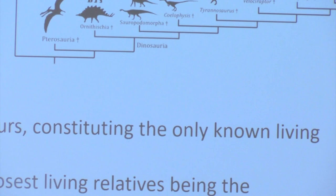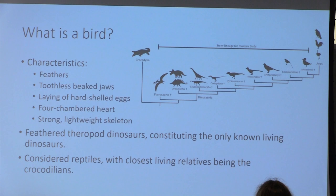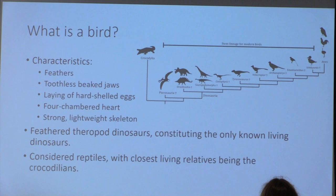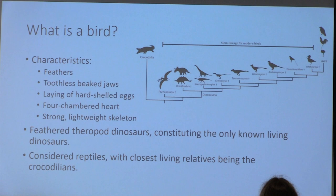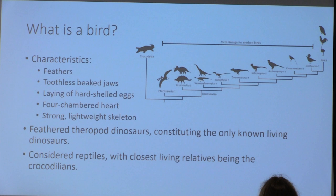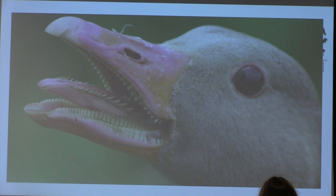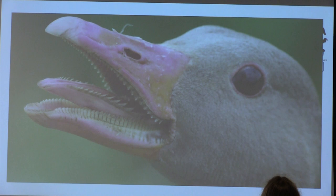What is a bird? All birds share the following characteristics: they have feathers, toothless beaked jaws, they lay hard-shelled eggs, they have a four-chambered heart, and they have a strong lightweight skeleton. That lightweight skeleton enables them to fly, but not all birds are flighted — penguins, kiwis, the dodo (RIP) are examples of flightless birds. Old world birds such as ostriches and rheas also don't fly. In case you ever wondered if geese have teeth — they do not. Those little striations are made of cartilage, the same material that makes up their beak.